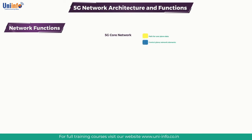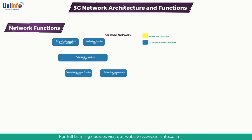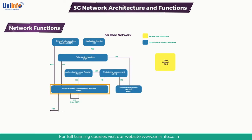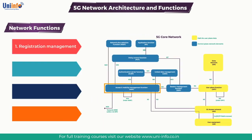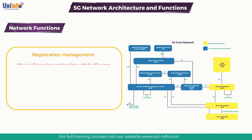Our next topic is Access and Mobility Management Function (AMF). The AMF is a control plane function within the 5G core network. The primary responsibilities of the AMF include: first, registration management; second, connection management; third, reachability management; fourth, mobility management. It works as a part of MME from 4G core. Registration management allows a UE to register and deregister with the 5G system, and a UE must complete the registration procedure to receive authorization to use 5G services.